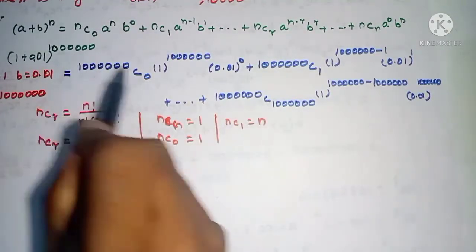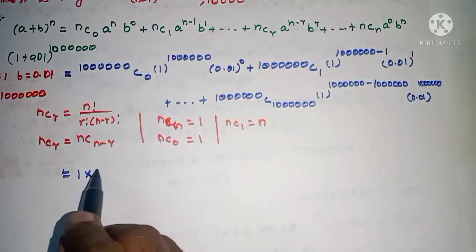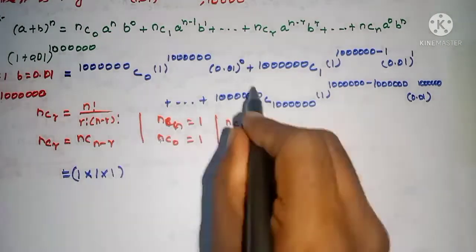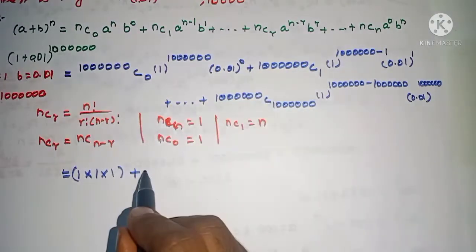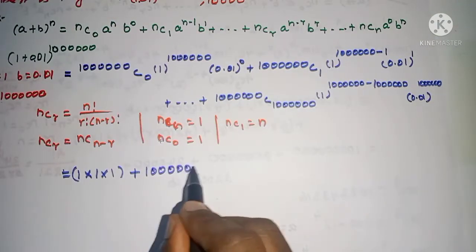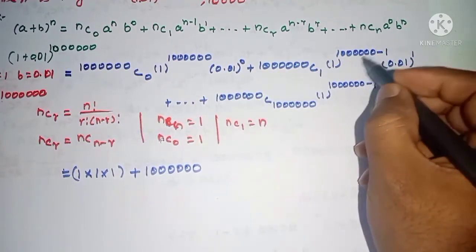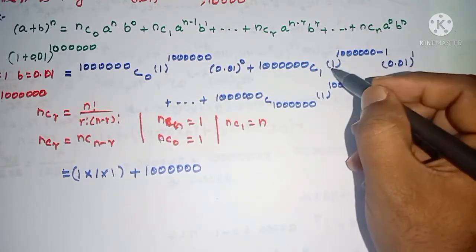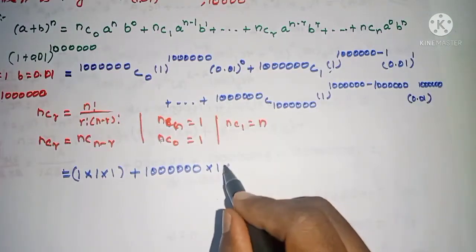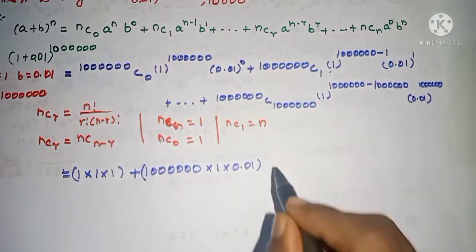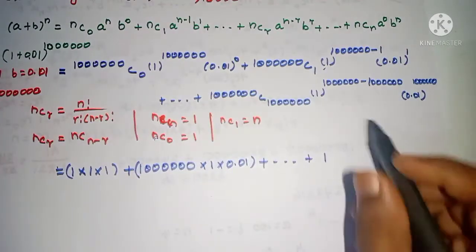First term: nC0 = 1, and 1 to any power is 1, anything to power 0 is 1, so the first term is 1. Second term: nC1 = n, so it becomes 10 lakh · (1)^(9,99,999) · (0.01)^1.